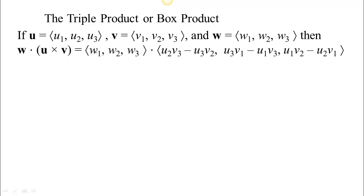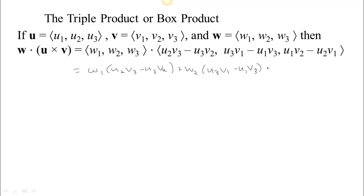So that's going to be: there's w, and we're going to dot it with u cross v. When you do that, you're going to get w1 times (u2·v3 minus u3·v2), plus w2 times (u3·v1 minus u1·v3), and plus w3 times (u1·v2 minus u2·v1). Now, that is actually a determinant.